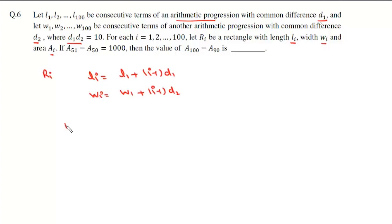Now we multiply it we will get Ai. So basically Ai will be L1W1 plus i minus 1 times L1D2 plus D1W1 plus i minus 1 whole square into D1D2.